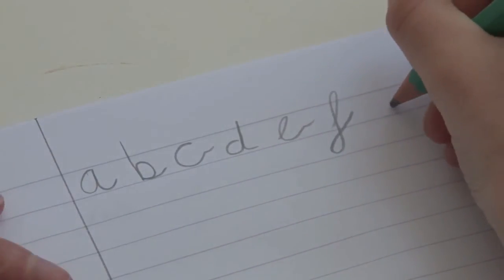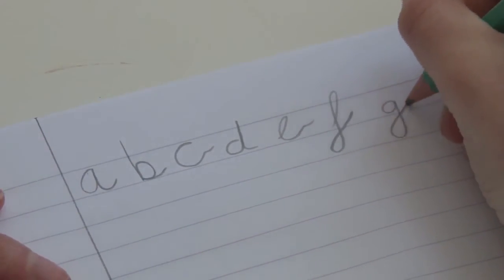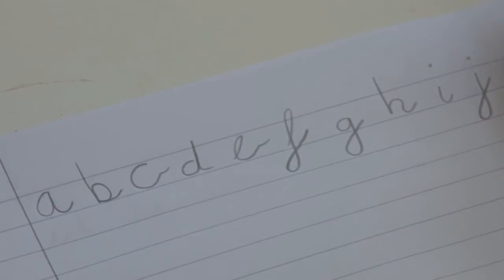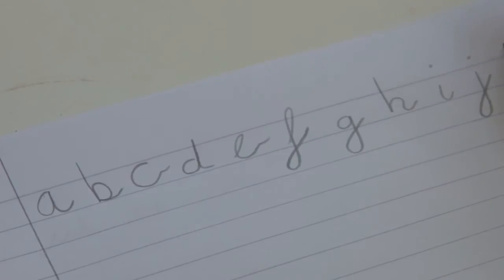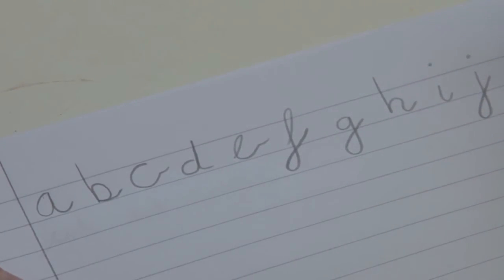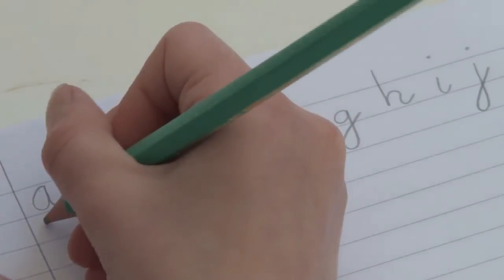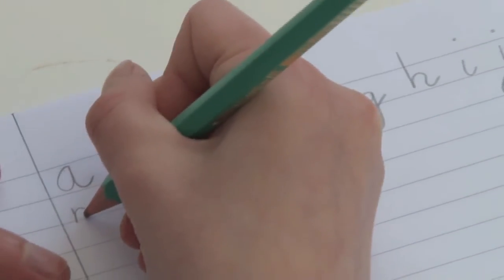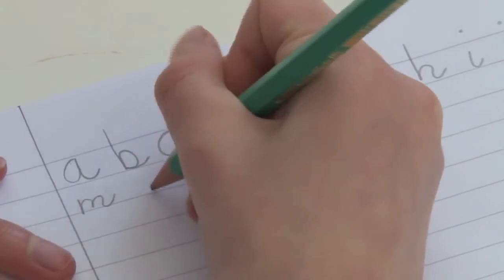Writing joined-up helps a child to flow across the page, and fluency helps when the child has to write faster. Being able to join the letters correctly helps with this fluency and enables the child to speed up their writing when they're older.